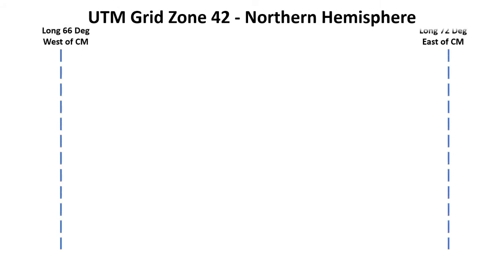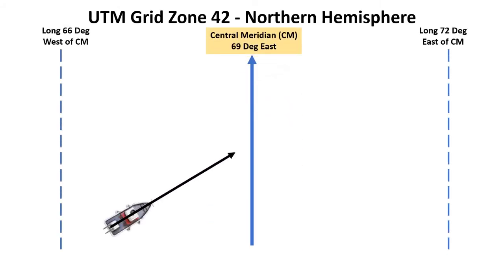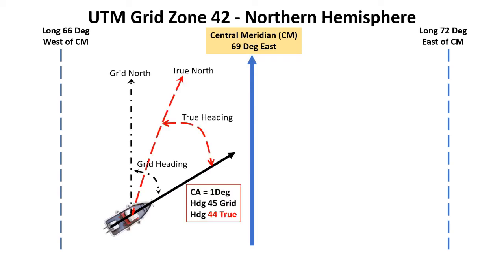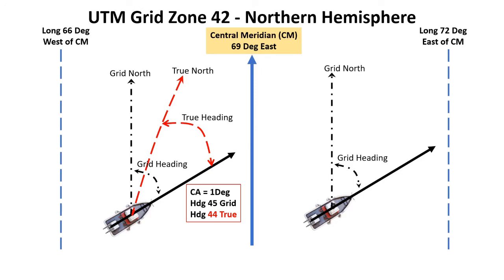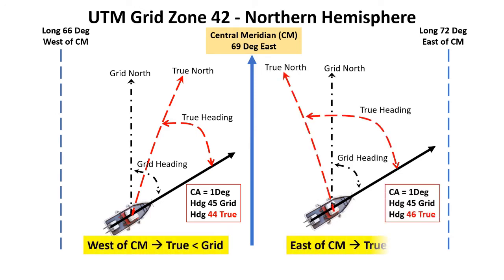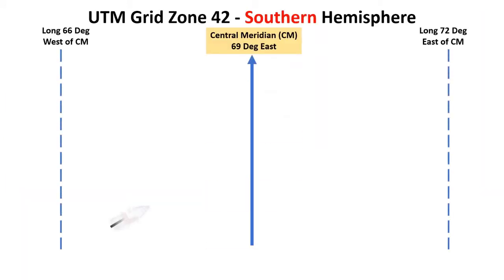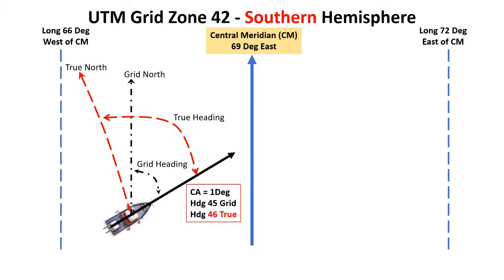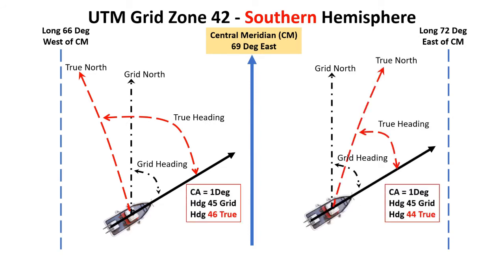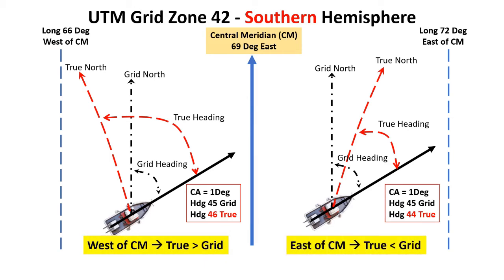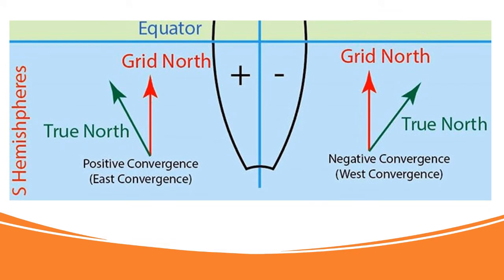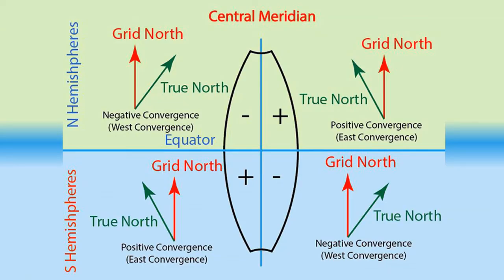Say you are in grid zone 42 in the Northern Hemisphere, and your boat is west of the Central Meridian — your grid heading is always greater than the true heading. In the Northern Hemisphere, east of Central Meridian is positive convergence and west of Central Meridian is negative convergence. In the Southern Hemisphere, your grid heading is always greater than your true heading when east of Central Meridian, and less than true heading when west of Central Meridian. So in the Southern Hemisphere, east of Central Meridian is negative convergence and west of Central Meridian is positive convergence.